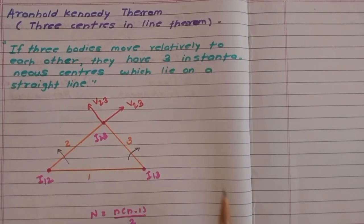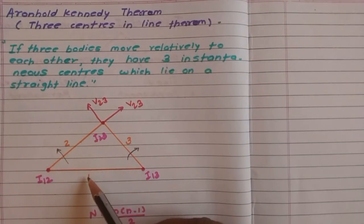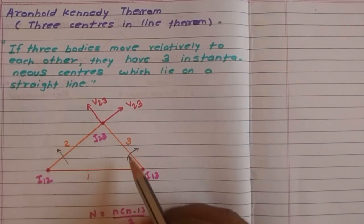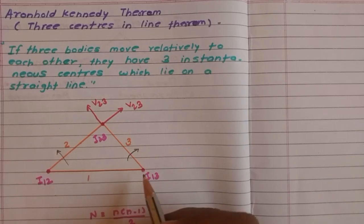We have considered three bodies, link 1, 2, and 3, which are having some relative motion with each other and they are joined together with a turning pair.